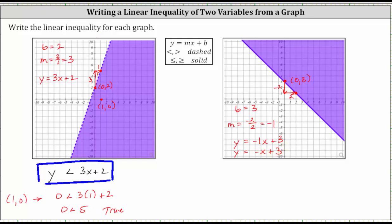The inequality is going to be in the form of y, then an inequality symbol, and on the right we have negative x plus three. This time, notice how the boundary line is solid, and therefore the inequality is going to be either less than or equal to, or greater than or equal to — the equal part makes the boundary line solid. Notice here, because we are shading above the boundary line, we use greater than or equal to. So the inequality is y is greater than or equal to negative x plus three.